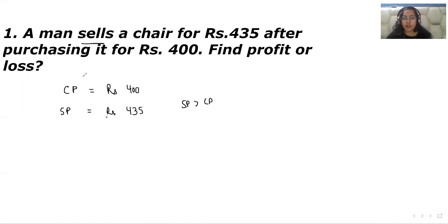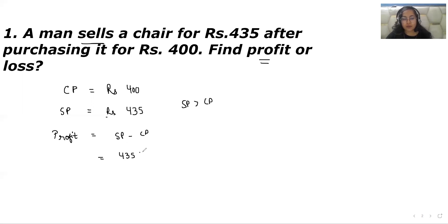They said find profit or loss. Since the selling price is greater than the cost price, profit occurs. The formula for profit is selling price minus cost price. Selling price is Rs 435 and cost price is Rs 400. So the profit is Rs 35. We have a profit of Rs 35 on that chair.